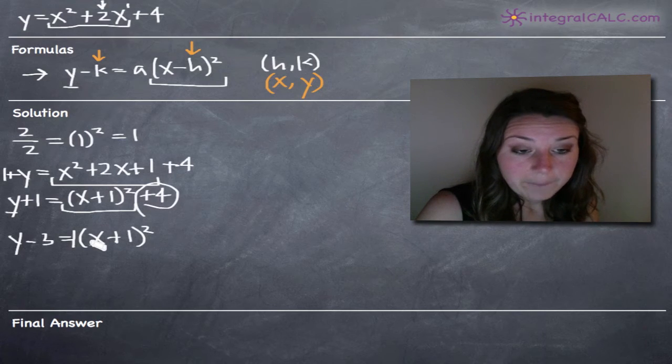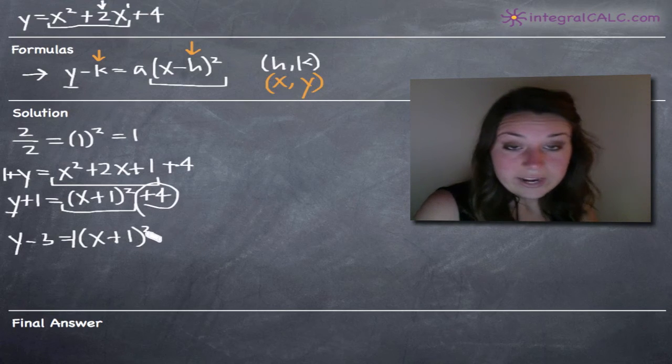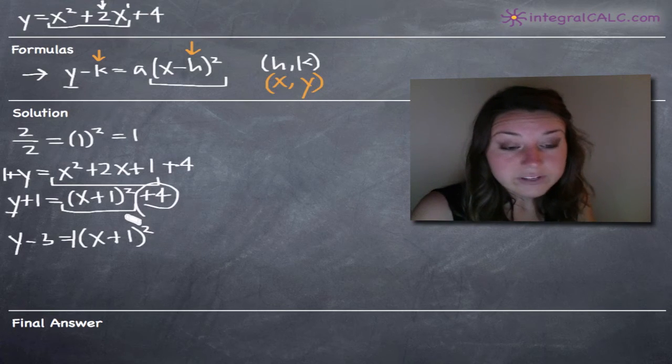But that's hanging out right there, and then we've got x plus one squared. So this is great. Now we can go ahead and pull out our vertex at h, k.